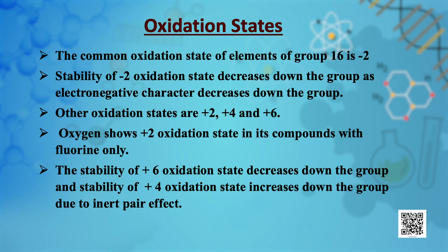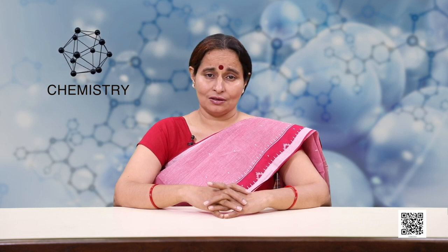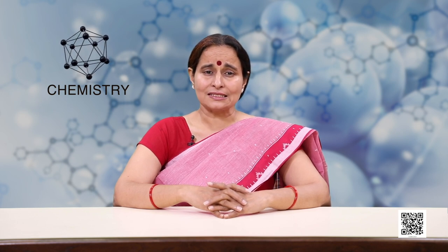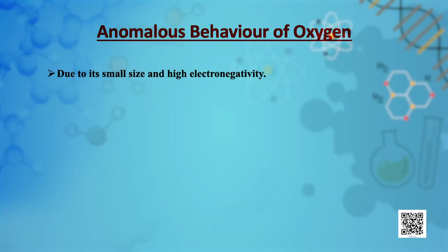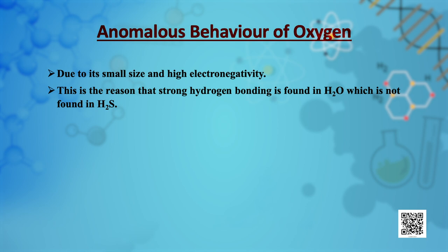The anomalous behaviour of oxygen, like other members of the p-block present in the second period, is due to its small size and high electronegativity. This is the reason that strong hydrogen bonding is found in water, which is not found in hydrogen sulphide.